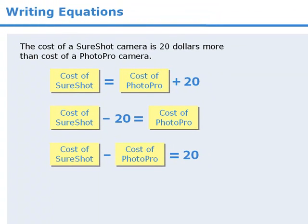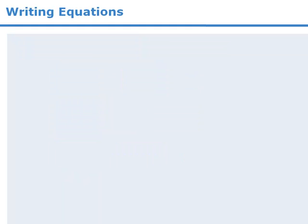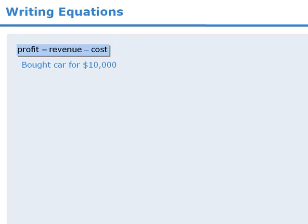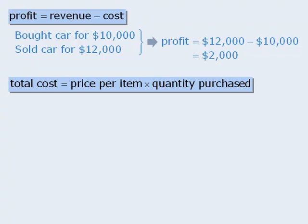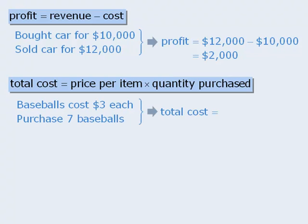When it comes to writing equations, the GRE assumes you are already familiar with certain relationships. For example, profit is calculated by subtracting the cost from the revenue. If you bought a car for $10,000 and later sold it for $12,000, the profit equals $12,000 minus $10,000, which is a $2,000 profit. You must also know that the total cost of multiple items equals the price per item times the number of items purchased. If baseballs cost $3 each and you purchase 7, the total cost is $21.